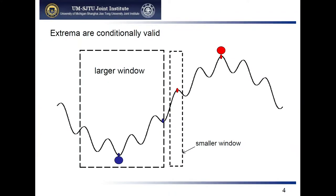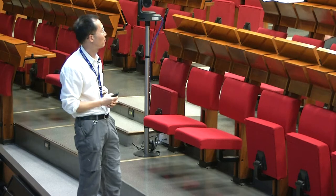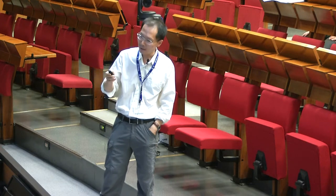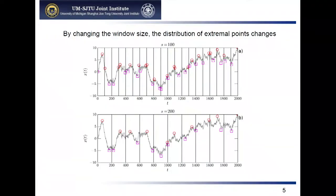A local extreme is valid only when the observation window is set very small. If you enlarge the observation window, that point is no longer extreme. So the idea is that extremal points are conditional values adjusted by changing the window size. If we look at the same profile and change the window size, we see the distribution of extreme points is very different.